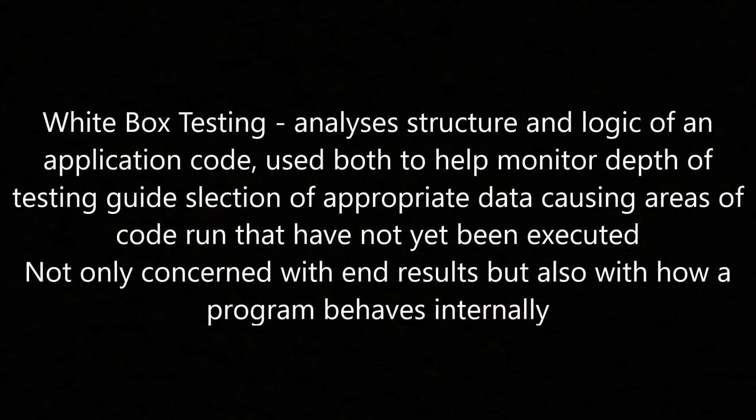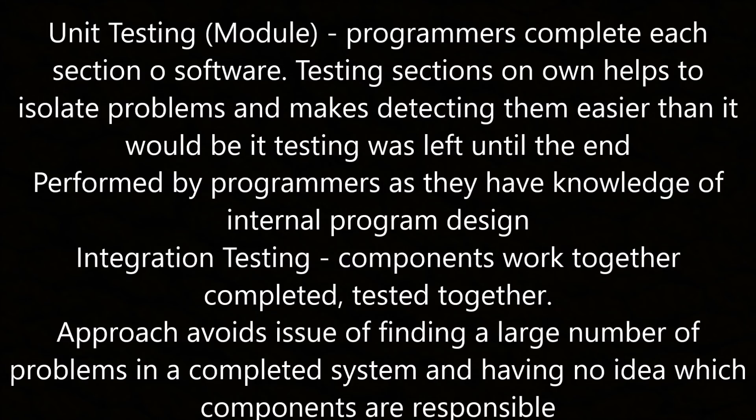White box testing is not only concerned with end results but also with how the program behaves internally. Unit testing is when programmers complete each section of software; testing sections on their own helps isolate problems and makes detecting them easier. It's performed by programmers as they have the knowledge of internal program design. Integration testing is when components work together and are tested together; this approach avoids the issue of finding a large number of problems on a completed system with no idea which components are responsible.